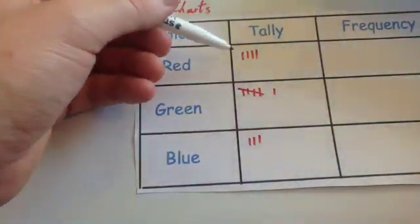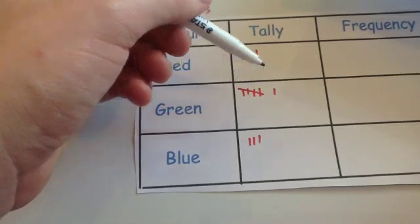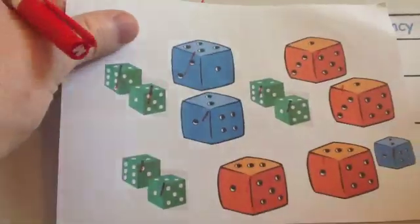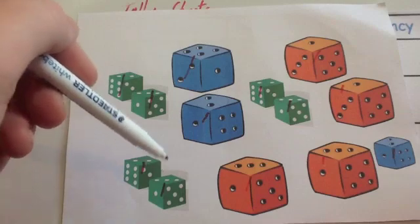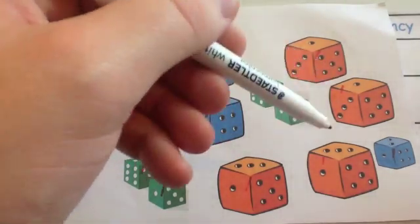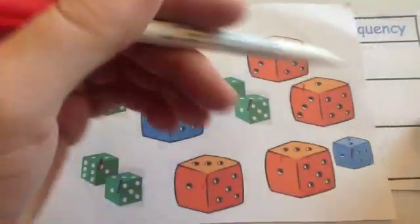Now let's just double check. One, two, three, four, five, six, seven, eight, nine, ten, eleven, twelve, thirteen. One, two, three, four, five, six, seven, eight, nine, ten, eleven, twelve, thirteen.